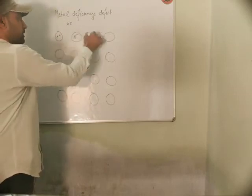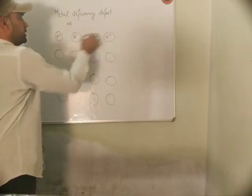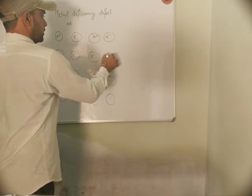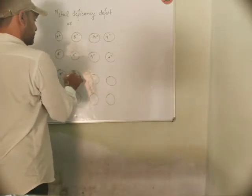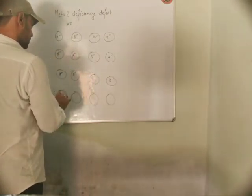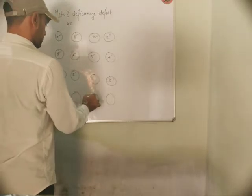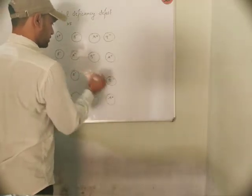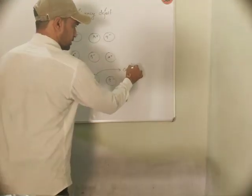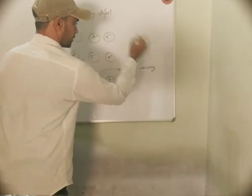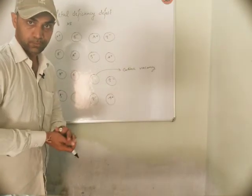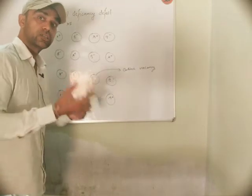Suppose we have a lattice: A positive, B negative, A positive, B negative — alternating positive and negative ions. Now suppose a B negative leaves its site, creating a cationic vacancy here. To make the crystal electrically neutral, a higher charge cation comes to that place.